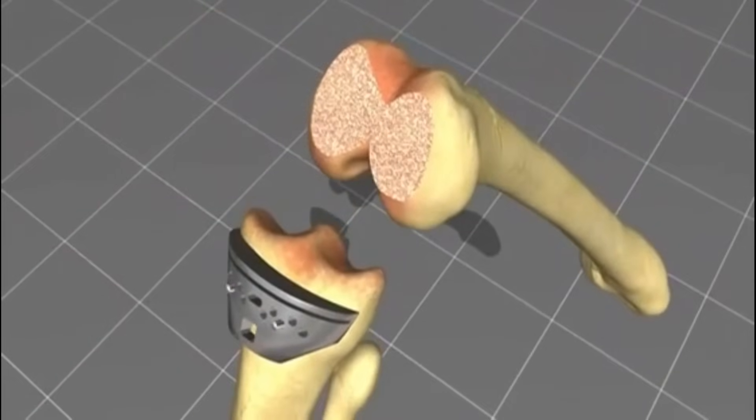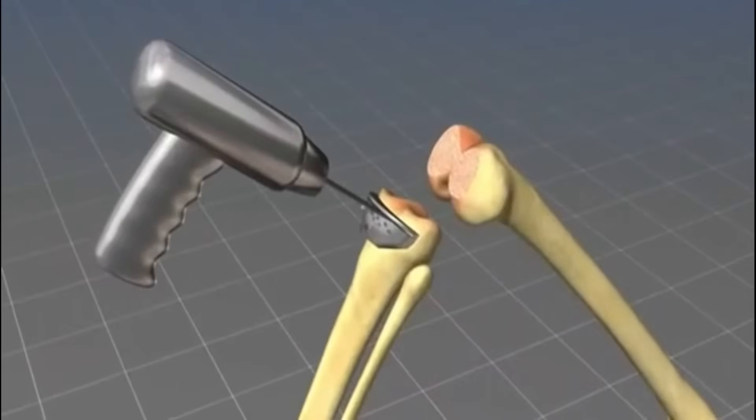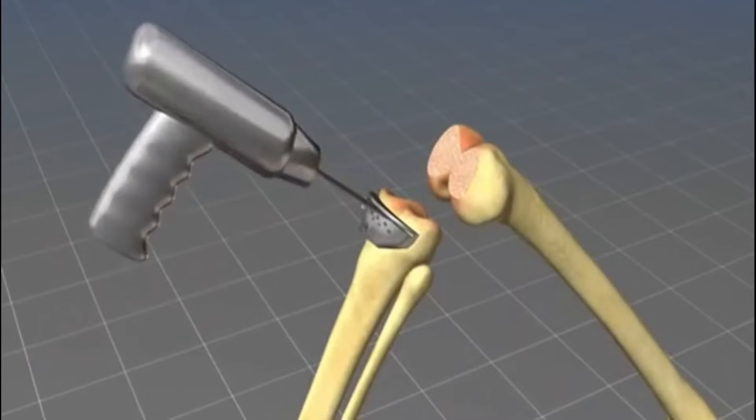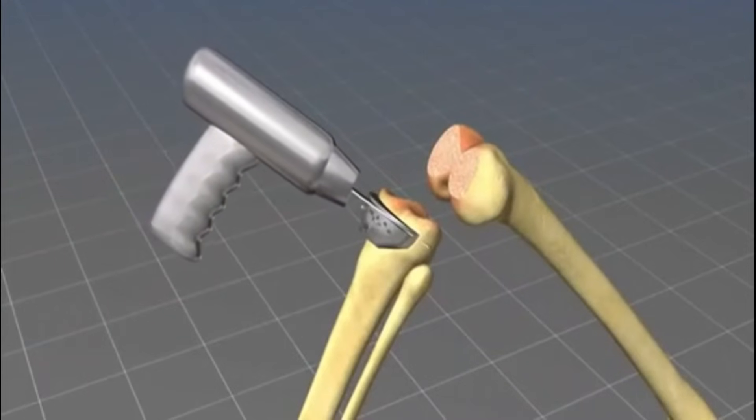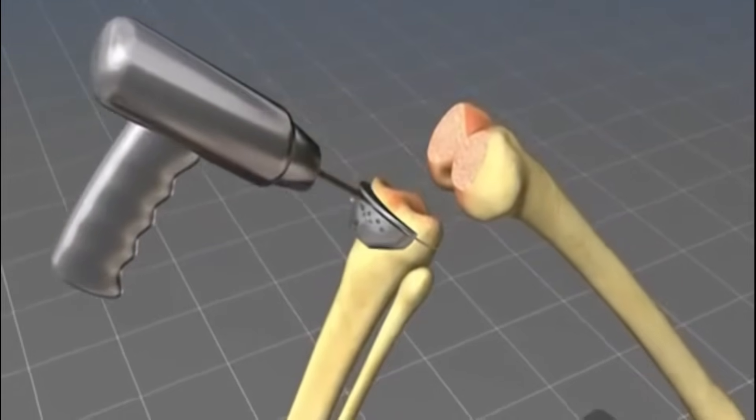The same surgical step is then performed on the tibia. Also here, exactly that amount is taken off the cartilage and bone, which is later replaced by the tibial part of the prosthesis.